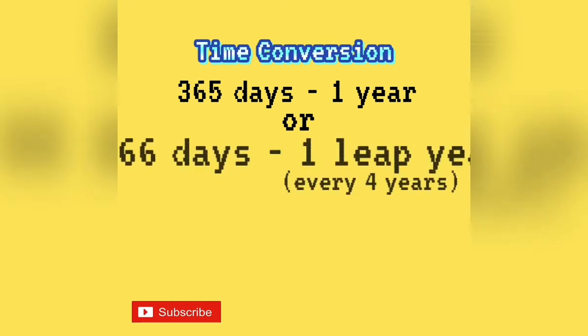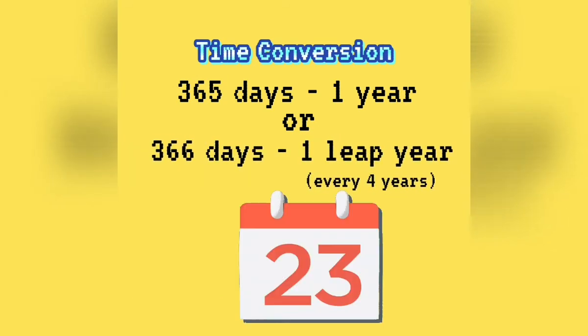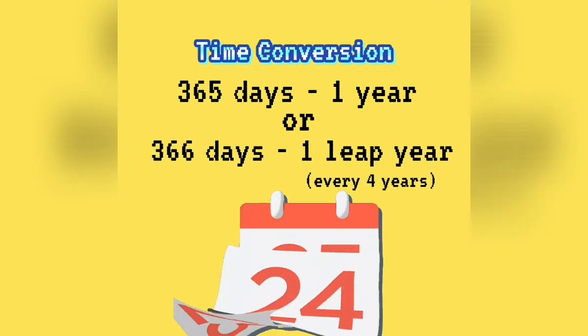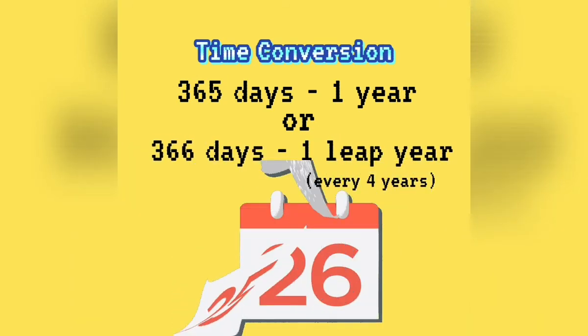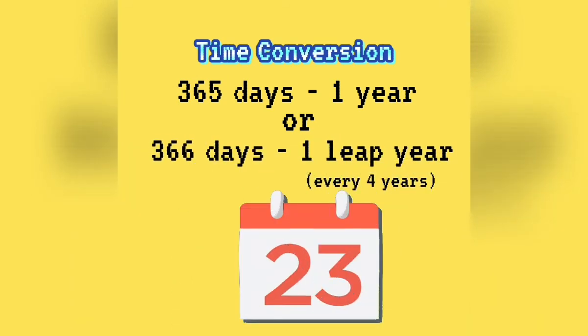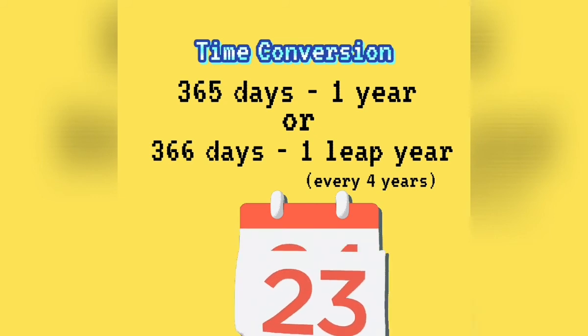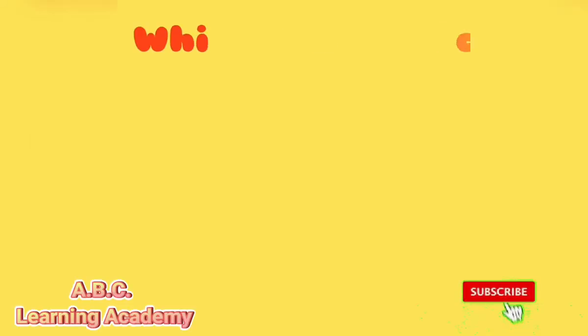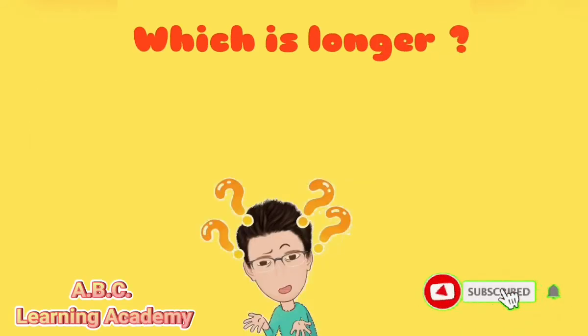365 days is equal to 1 year, or 366 days is equal to 1 leap year, every 4 years.